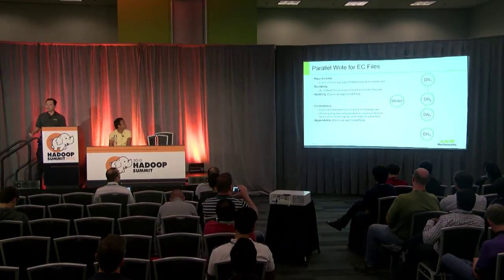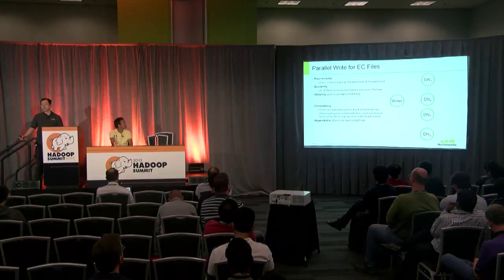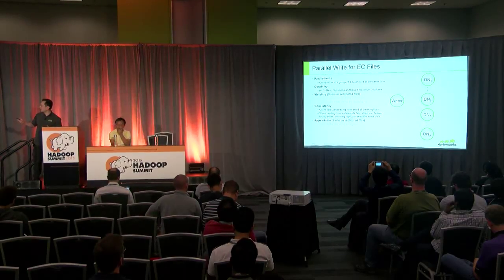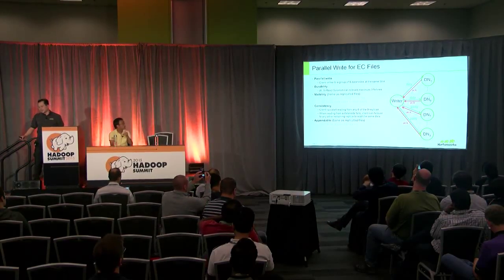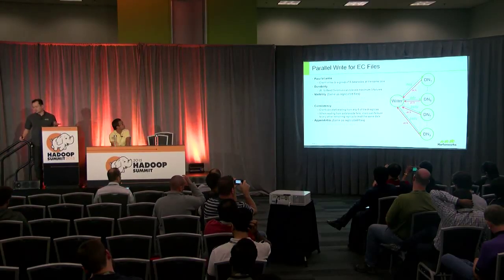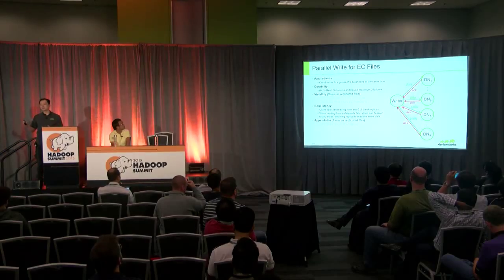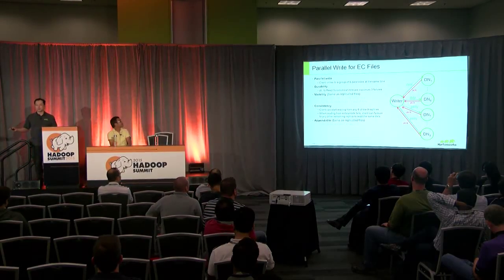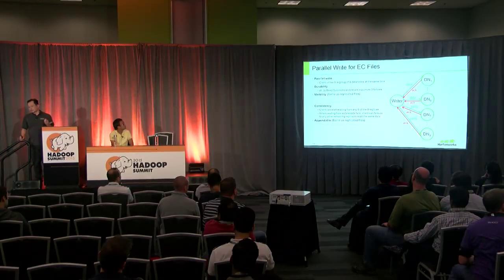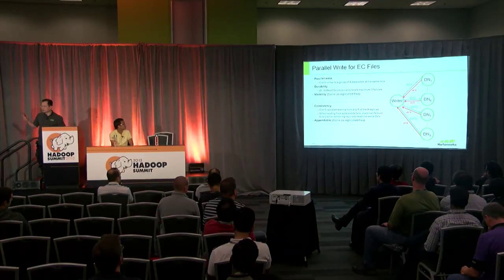For an erasure-coded file, we don't use a write pipeline because we have nine different blocks going to different destinations. Instead we do a parallel write: the client writes to a group of nine data nodes simultaneously. Durability is provided by the 6+3 Reed-Solomon scheme, which can tolerate a maximum of three failures. For visibility, we provide the same guarantee — readers can read a being-written file. For consistency, a reader now needs to read from any six of the nine data nodes and can fail over to any other data node.